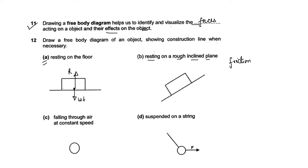Weight always acts in the downward direction, towards the center of gravity. Since the natural tendency is for the object to move downward along the slope, it might be moving in that direction, so the friction will act in the opposite direction. I am writing friction with a small f.